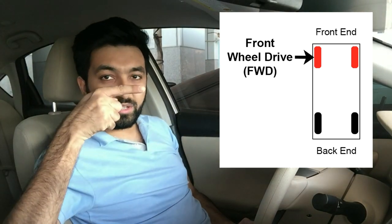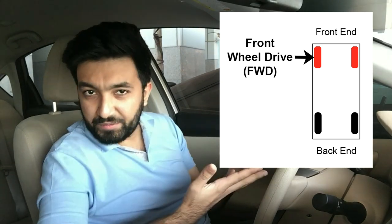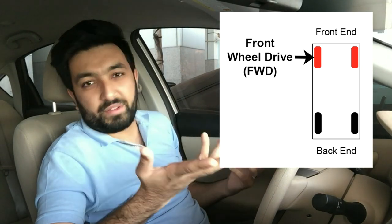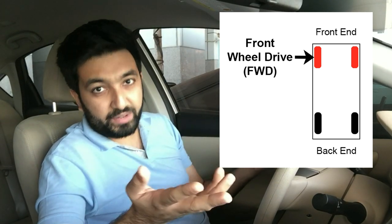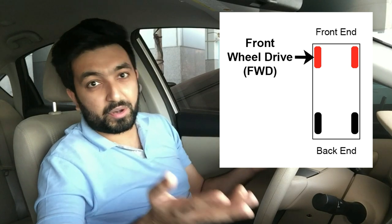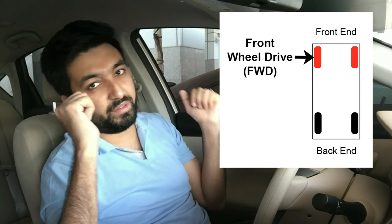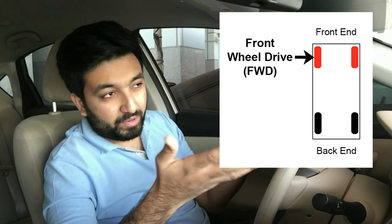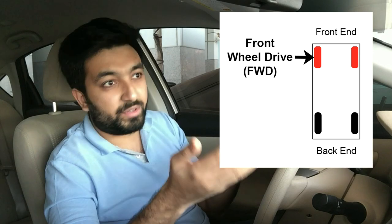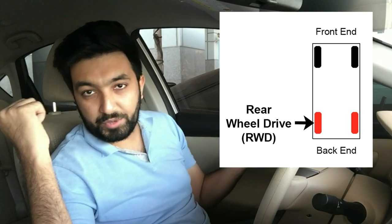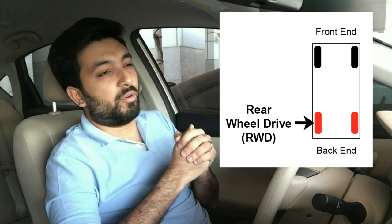The first type of drive system we'll discuss is the two-wheel drive. As the name suggests, two-wheel drive means either two of the wheels are driven in your car — the front wheels or the back wheels. If it's the front wheels, it's called FWD, which is front-wheel drive, and if the rear wheels are driven, it's called RWD.